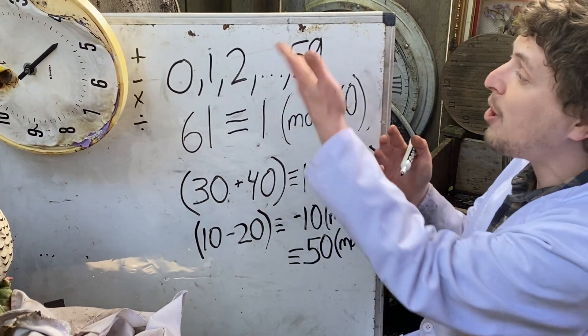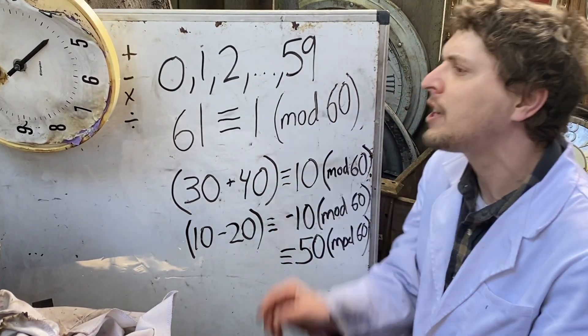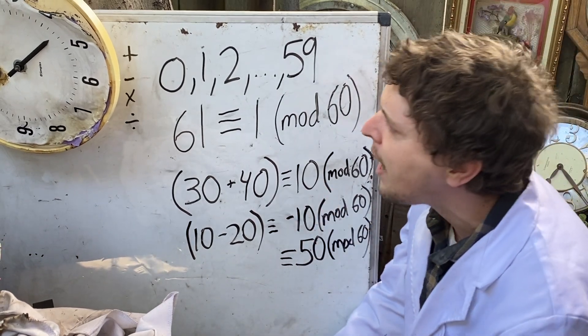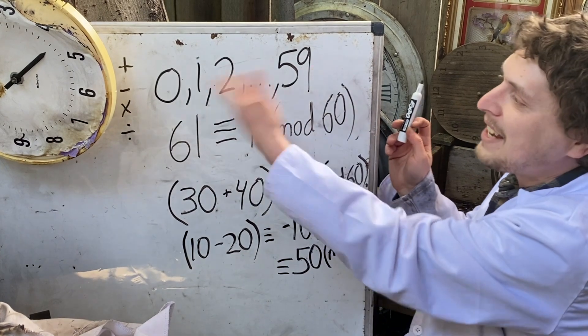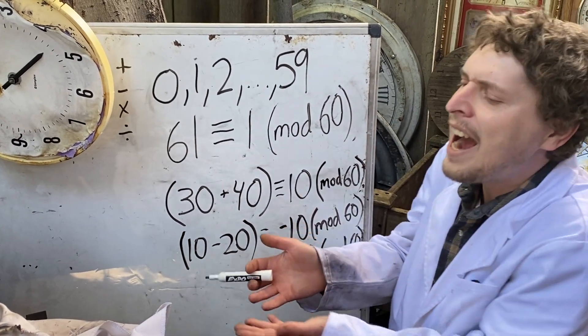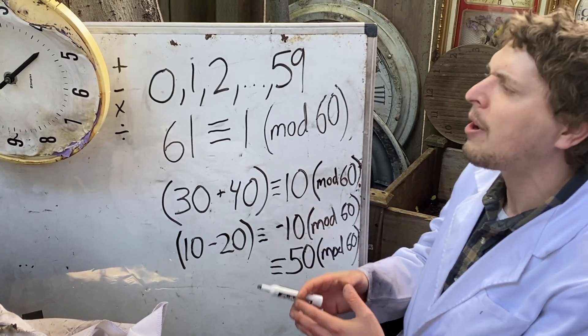Same with multiplication. If I do something like going forward 13 minutes 17 times, I'm going to end up on some minute number that's in this set. Doing that action isn't going to create a 61st minute per hour.